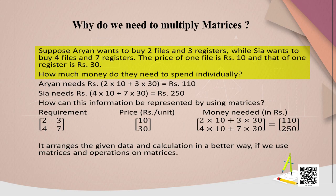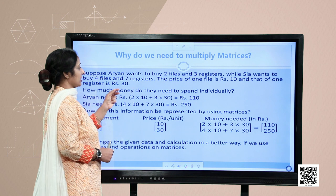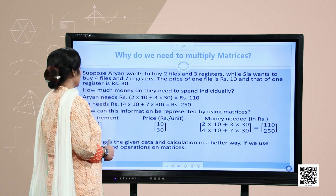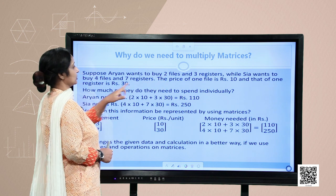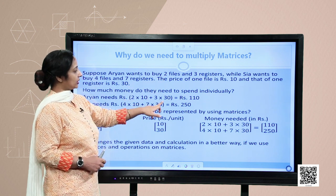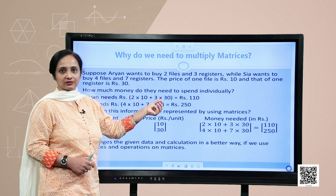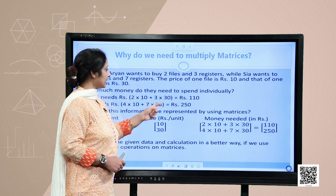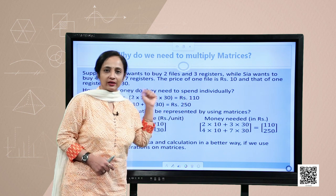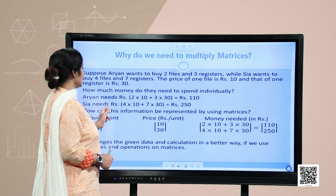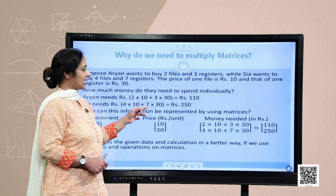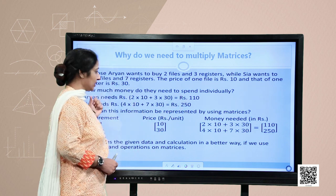For example, Aryan wants to buy two files and three registers, and Sia wants to buy four files and seven registers. The price of one file is ten rupees and a register is thirty rupees. So how much money do they need to spend individually? Aryan needs two files at ten rupees, that is twenty, plus three registers at thirty rupees each, so three into thirty — in total he requires one hundred and ten rupees.